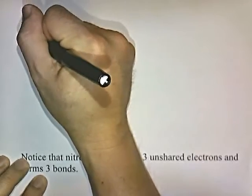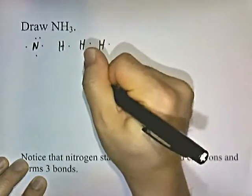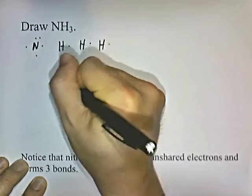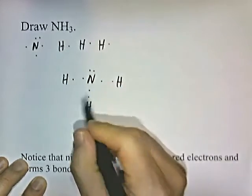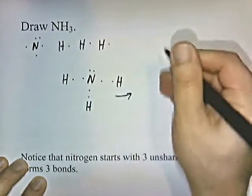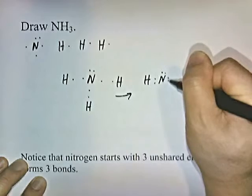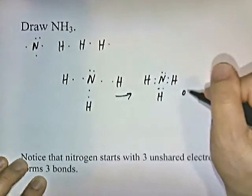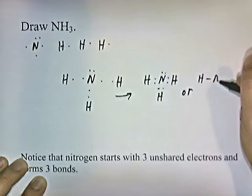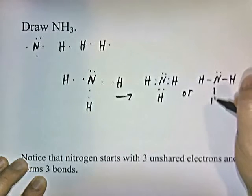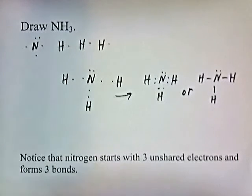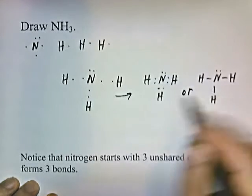Let's draw NH₃. Nitrogen is in group five, so it has five electrons, giving it three unpaired electrons. Each hydrogen has one valence electron. Arranging this to pair up all the unpaired electrons, we end up with that structure. Notice that nitrogen starts with three unpaired electrons and forms three bonds. Also notice that nitrogen is surrounded by eight electrons, giving it an octet, and each hydrogen has two electrons.